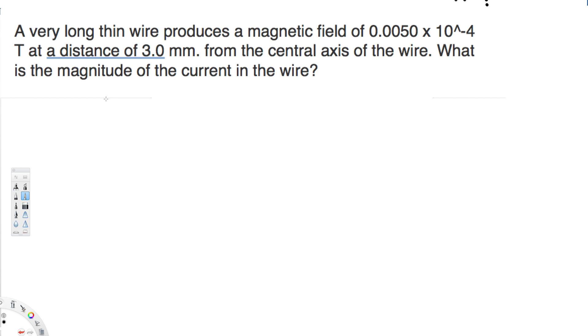Everyone guys, let's look at this problem. The question is asking: a very long thin wire produces a magnetic field of 0.005 × 10⁻⁴ tesla at a distance of 3.0 millimeters from the central axis of the wire. What is the magnitude of the current in the wire?